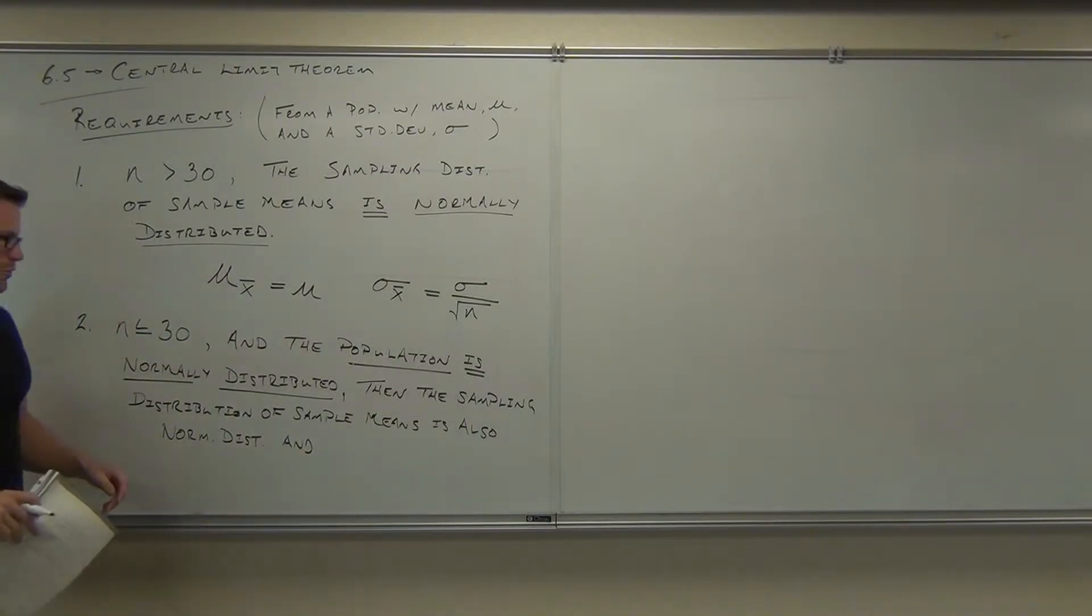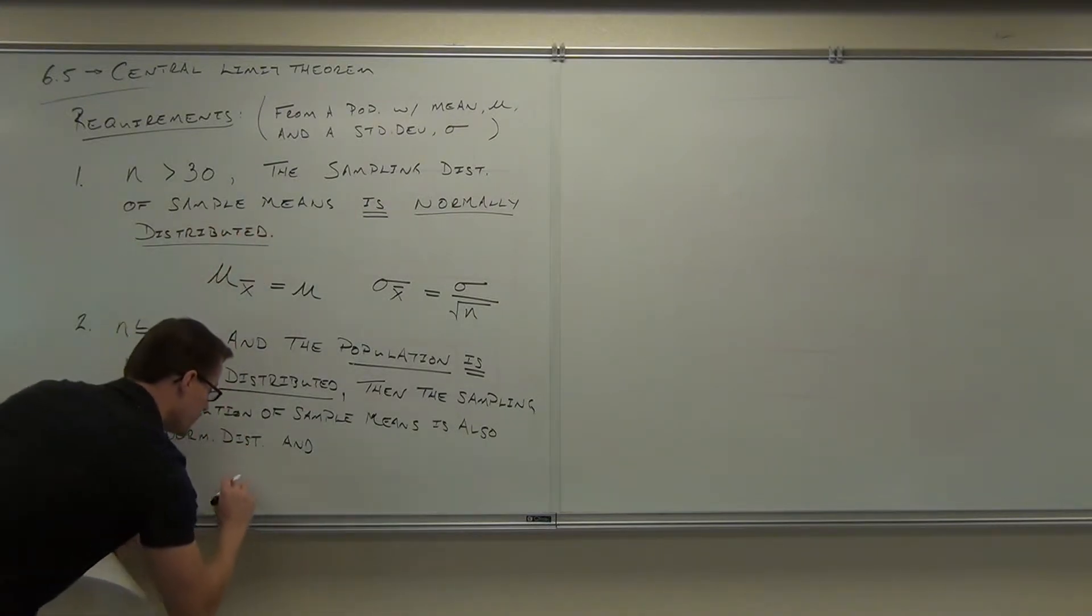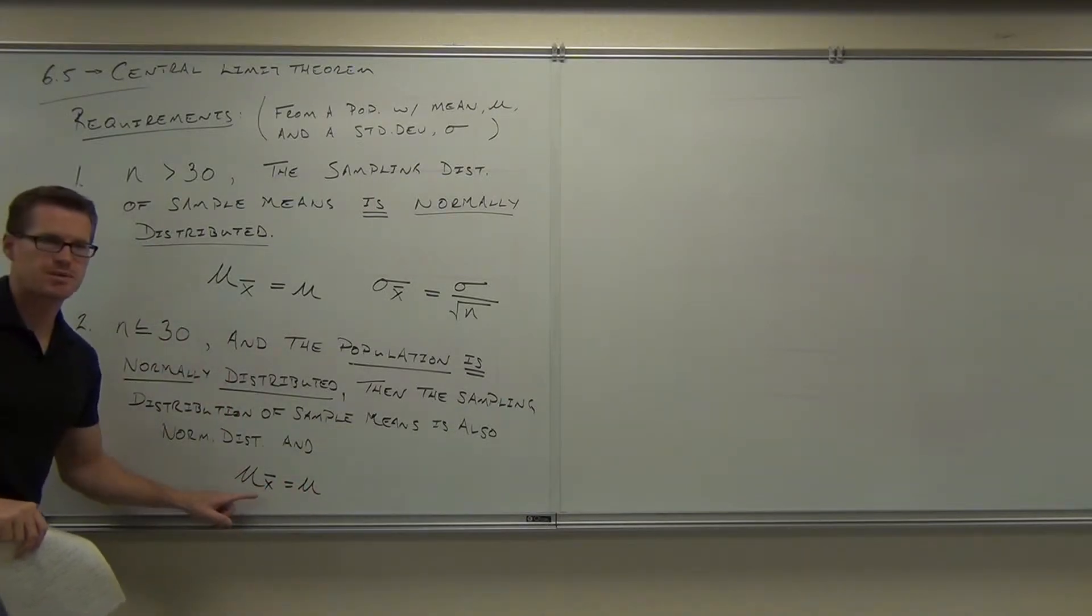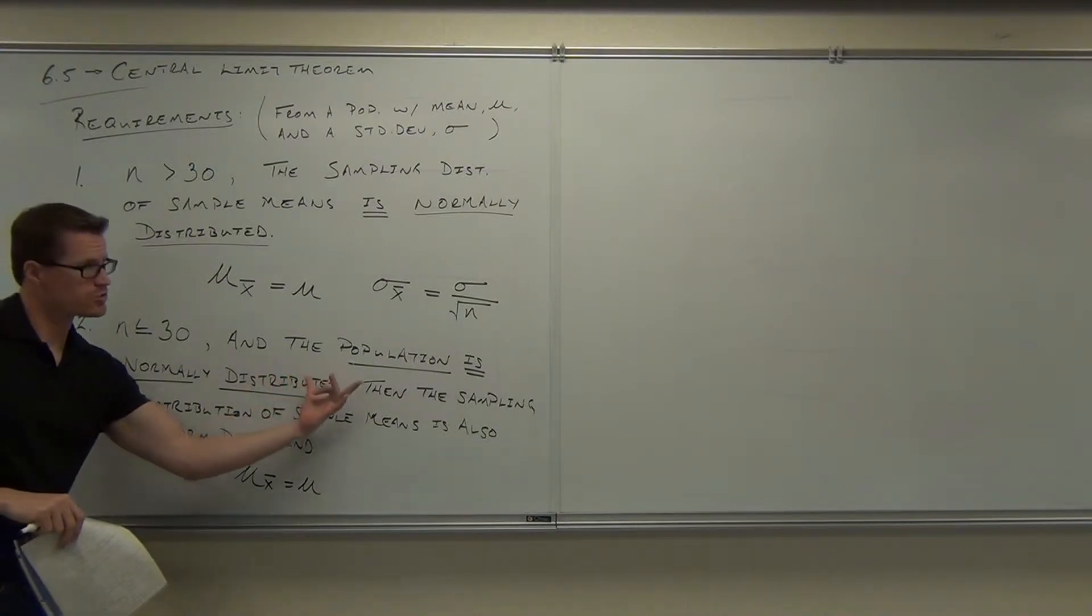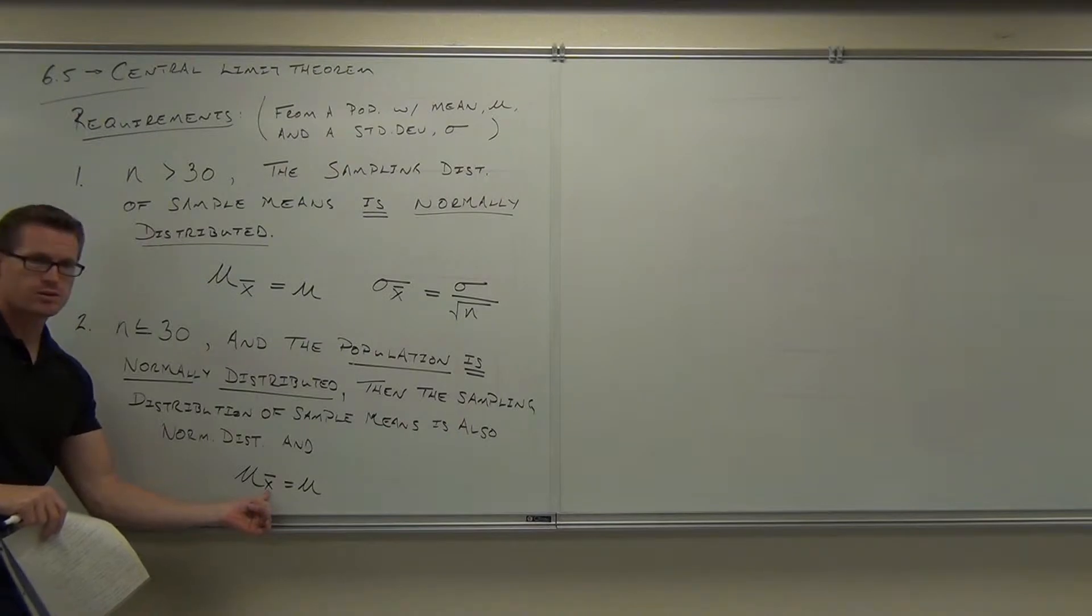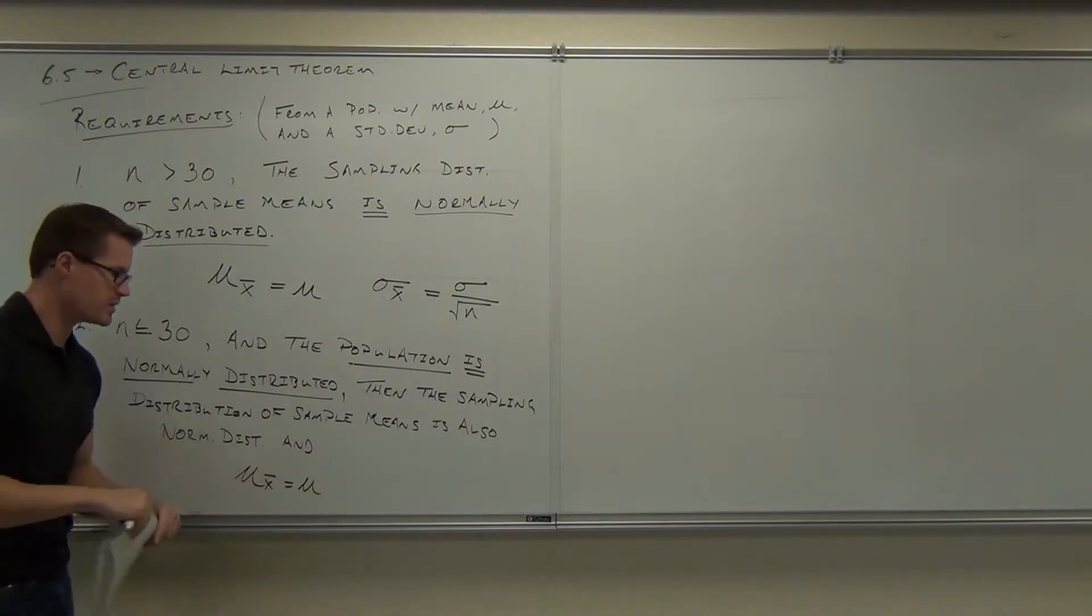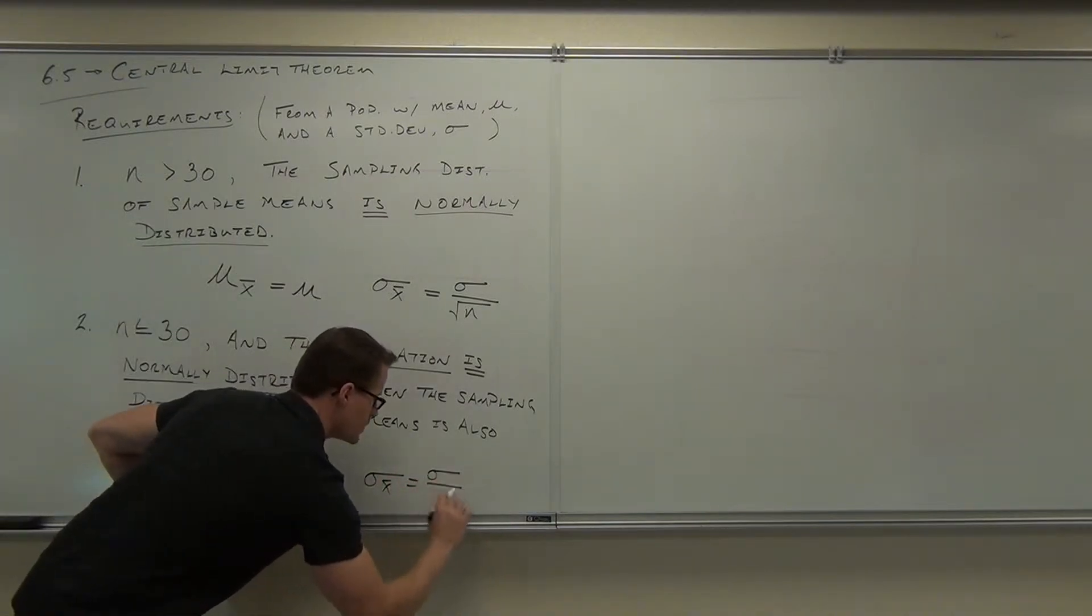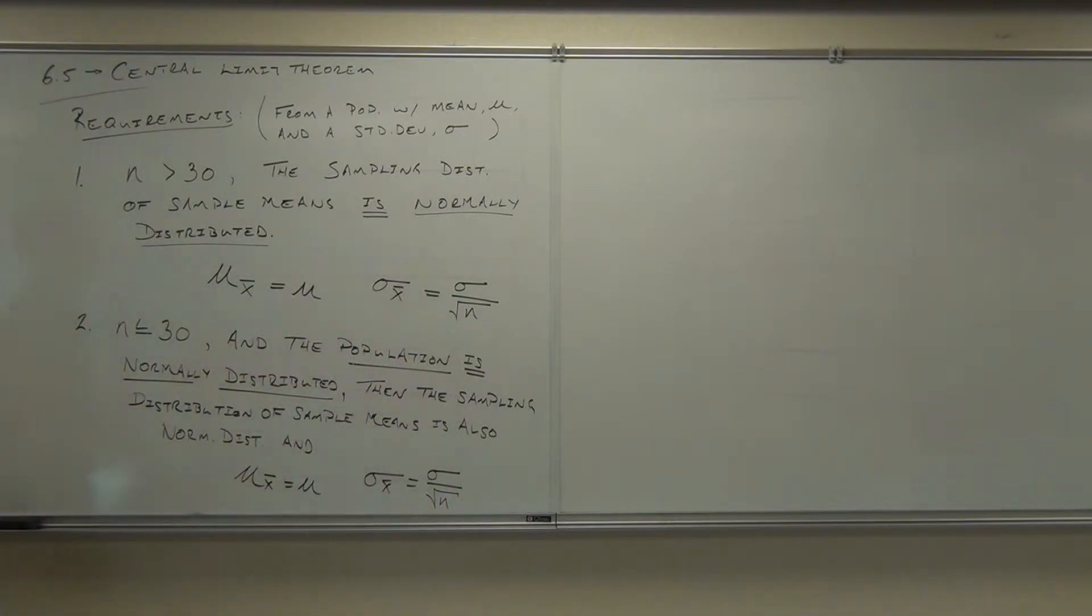Then the sampling distribution of sample means is also normally distributed, and the same stuff will hold. The average of all those sample means, even though the sample size isn't more than 30, it came from a population that's normally distributed. The average of all those sample means is going to equal the population mean. And again, the standard deviation of those sample means will equal the standard deviation of the population divided by the square root of n.